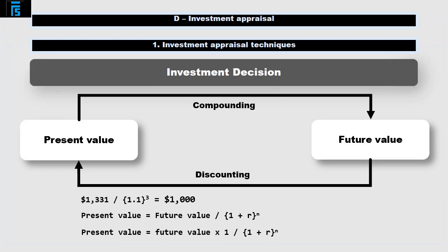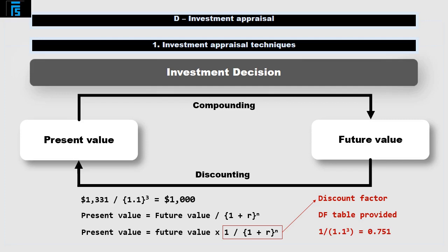This can also be written as follows: the present value equals the future value times one over (1 + r) to the n. The term one over (1 + r) to the n is called a discount factor. Discount factor tables are provided for you in the exam, so you can look up the value of this term without having to calculate it. For example, the ten percent three year discount factor would be calculated as one over 1.1 cubed, equals 0.751.